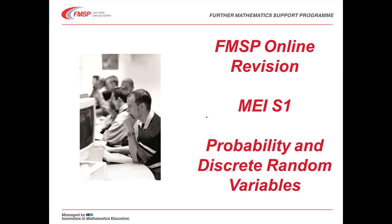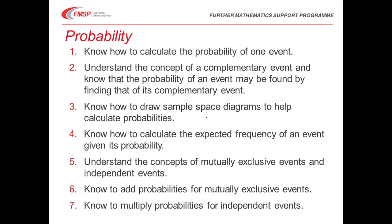We'll start by looking at the specification. These are the things that you need to know for probability. Some of these are things you've known since GCSE or earlier; there are a few new things and a few things that are more significant in this module. Point number two is important: knowing that the probability of an event may be found by finding that of its complementary event. In other words, the probability of something happening is one minus the probability of it not happening.